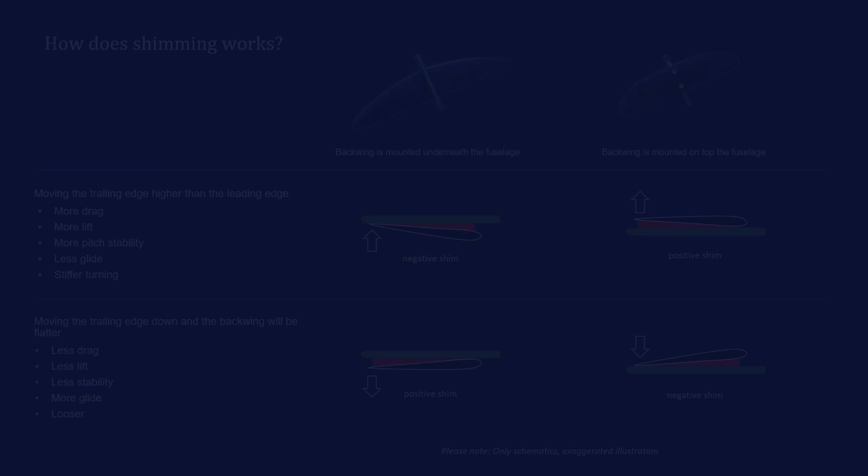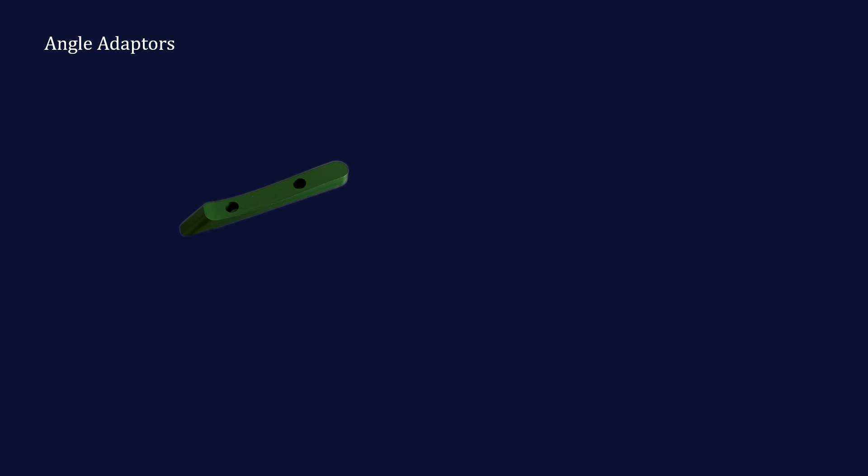When I explained the different assembly types, I also mentioned that some brands are using angle adapters between the fuselage and the back wing. For sure, also for those setups you can work with shims. However, many of the brands who designed the setup with an angle adapter also offer angle adapters with different angles. So, in many cases you can just replace the angle adapter with a different angle instead of having a shim.